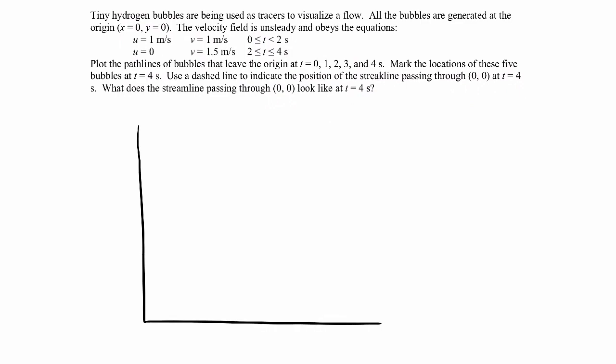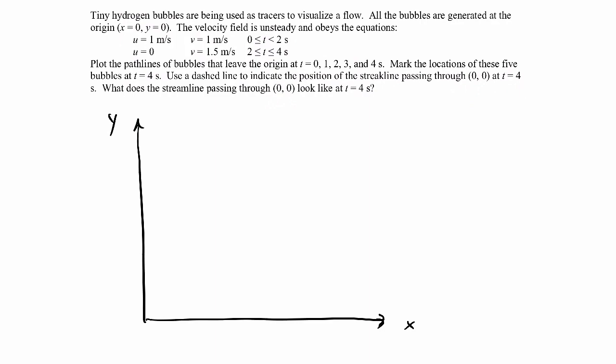So here are our x and y axes with tick marks. We'll go out to about three on x and up to five on y. We're going to release particles from down here at the origin. Let me release the first particle at time t equals zero.